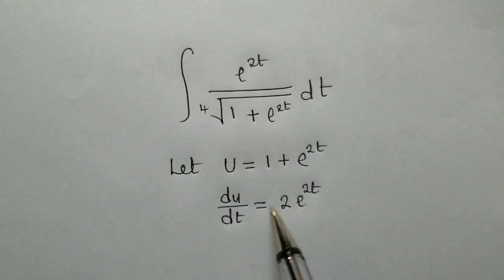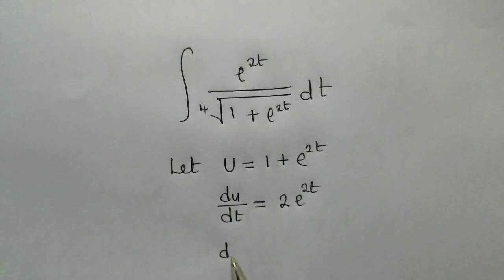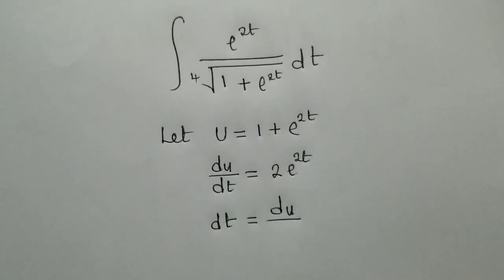So next, we make the derivative, or we make dt subject of the formula. So we cross multiply. We're going to have dt is equal to du over 2 e 2t. So this is what we're going to have.